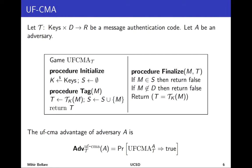Next we need a security definition for message authentication schemes. The notion is called UFCMA — Unforgeability under Chosen Message Attack. We fix a family of functions T (the MAC), which is a public object — a standardized algorithm anyone can implement. We denote the adversary as A. The game UFCMA is subscripted by the family of functions to indicate it parameterizes the game, and the adversary calls the game's exported procedures.